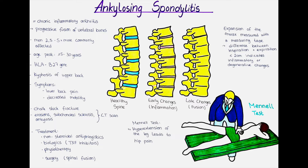This fracture is also called chalk stick fracture. The diagnosis is usually confirmed with imaging studies. In early stages, an X-ray image usually does not show signs of the disease, so MRI is usually the imaging technique of choice at that stage. In later stages, the vertebra looks like a bamboo tree. This is due to calcification of the bones, tendons and ligaments.